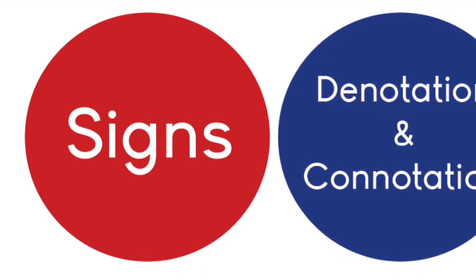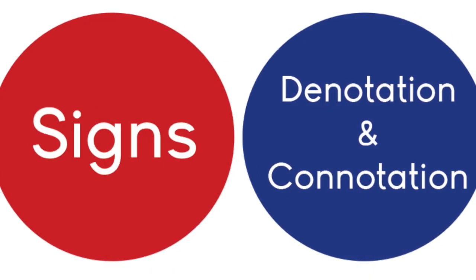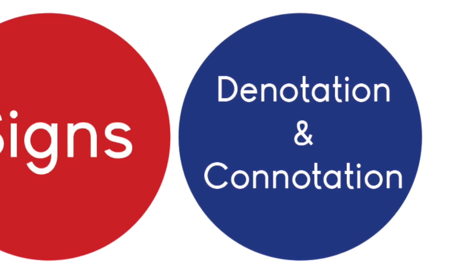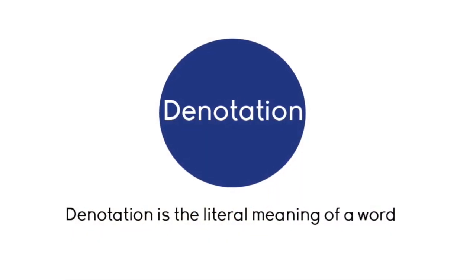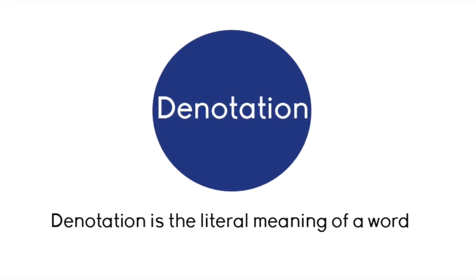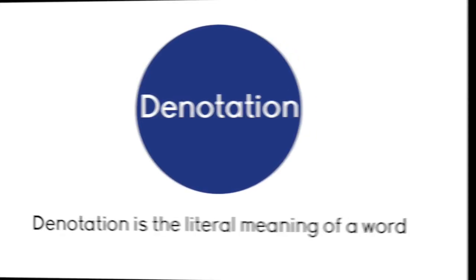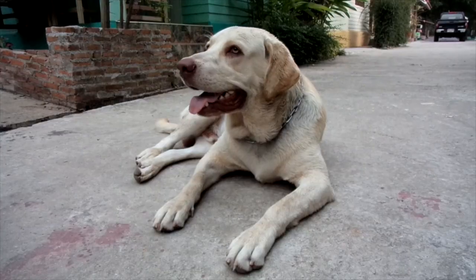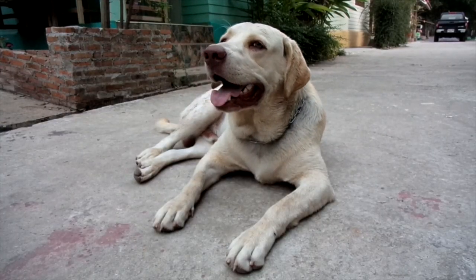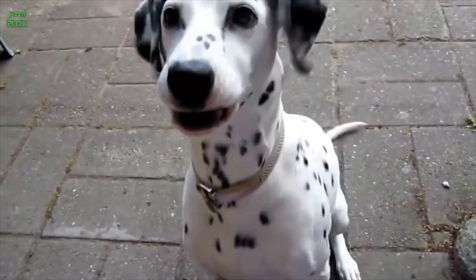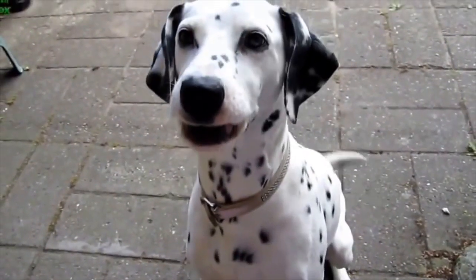Now that we understand the basics of signs, let's talk about denotation and connotation. Denotation is the literal meaning of a word — think about it in dictionary terms. For example, 'dog.' A dog is defined as a domesticated carnivorous mammal that typically has a long snout, an acute sense of smell, and a barking, howling, or whining voice.